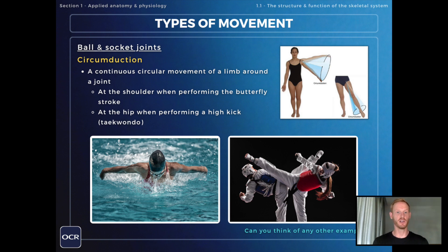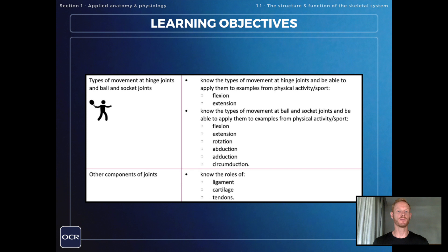That was everything you need to know on the types of movement at hinge joints and ball and socket joints. Join me next time for the final learning objective in chapter one on the roles of ligaments, cartilage, and tendons.